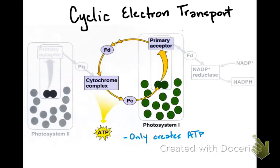Cyclic electron transport is also a possibility. You can see the non-cyclic pathway in gray and the cyclic pathway in color. Cyclic electron transport only creates ATP — electrons pass through Photosystem I, get excited, pass to ferredoxin, pass to the electron transport chain, pump hydrogen ions across to generate ATP by chemiosmosis, then flow back to plastocyanin and back to Photosystem I over and over. It doesn't need Photosystem II and doesn't consume extra water.